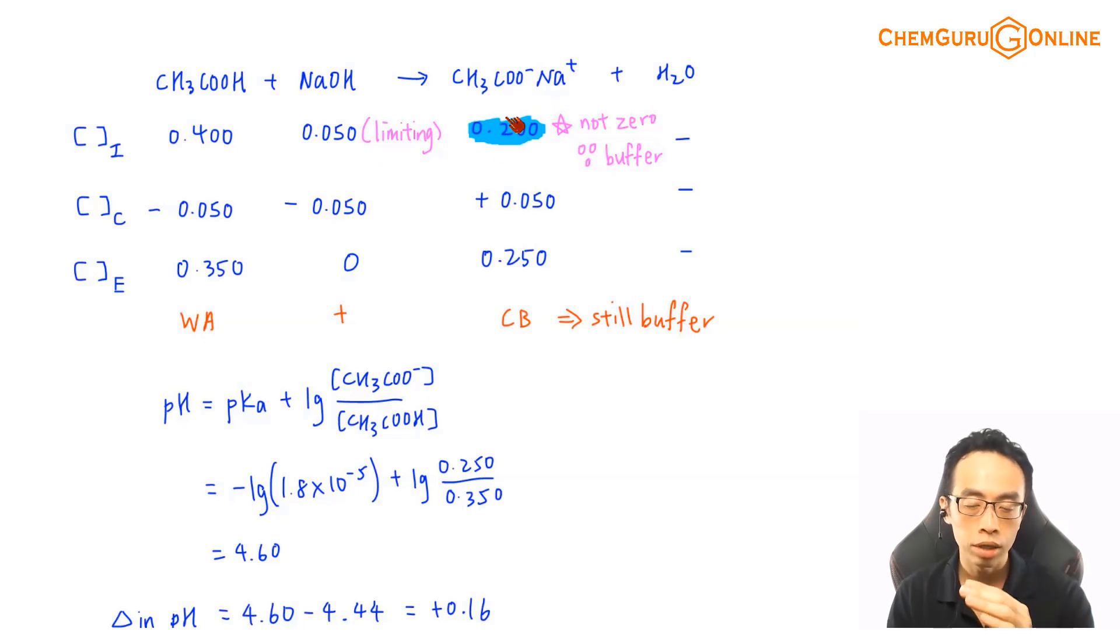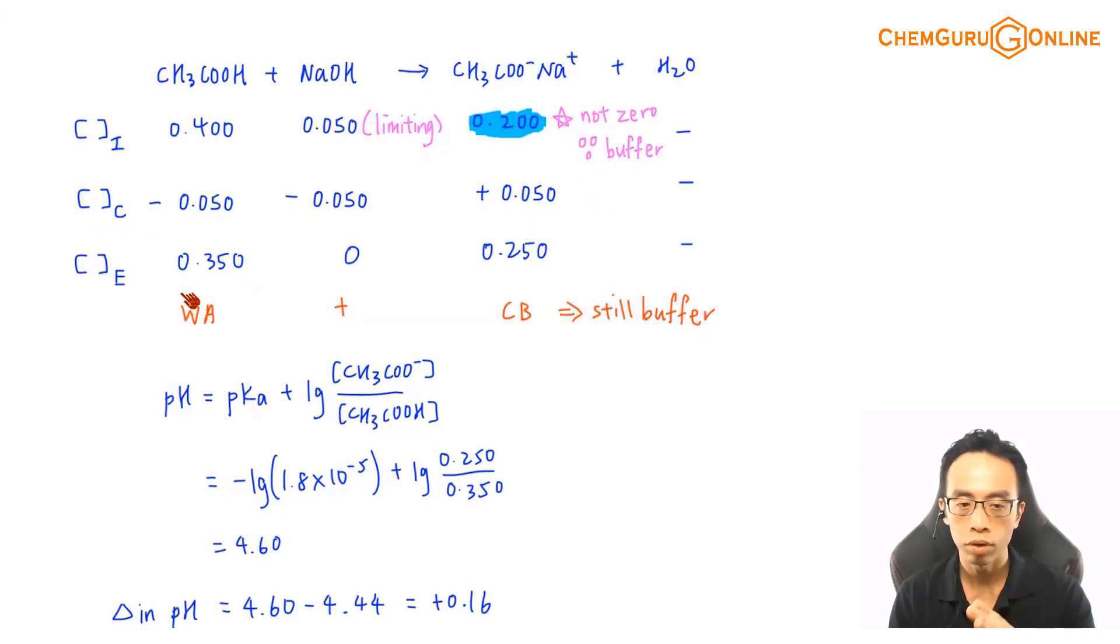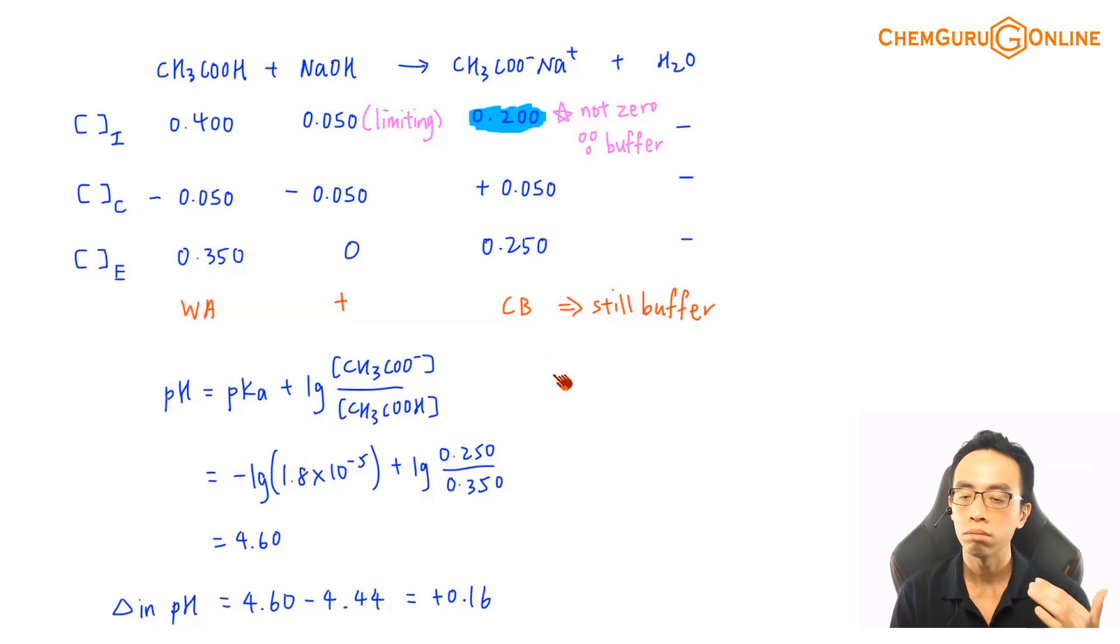Once you take note of this, at the beginning, this concentration of your acid, or rather your conjugate base is 0.2, then the rest of it is the same. Sodium hydroxide is limiting, 100% of it will be used up. So, add these two together, you'll end up with 0.35 mol per dm³ of your weak acid, no sodium hydroxide because this is limiting, 0.25 mol per dm³ of your conjugate base. So I still have a mixture of your conjugate acid base pair, this is still a buffer.